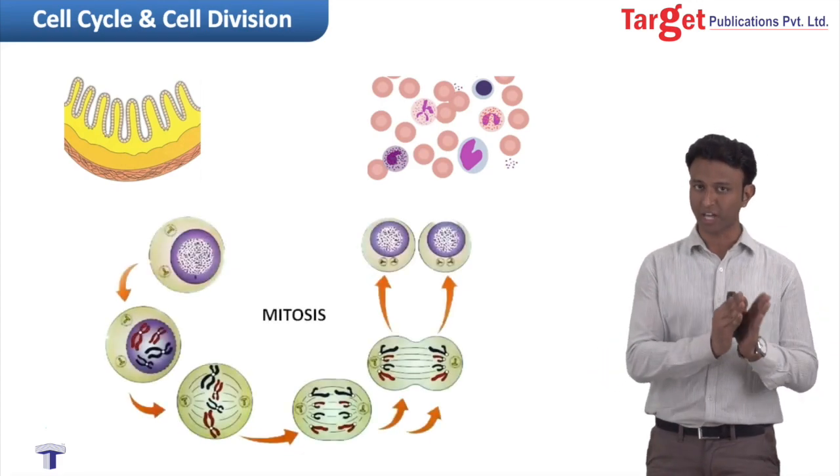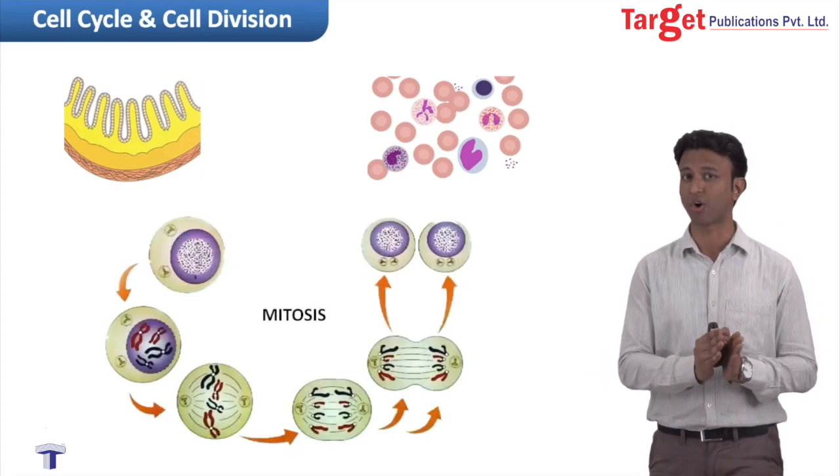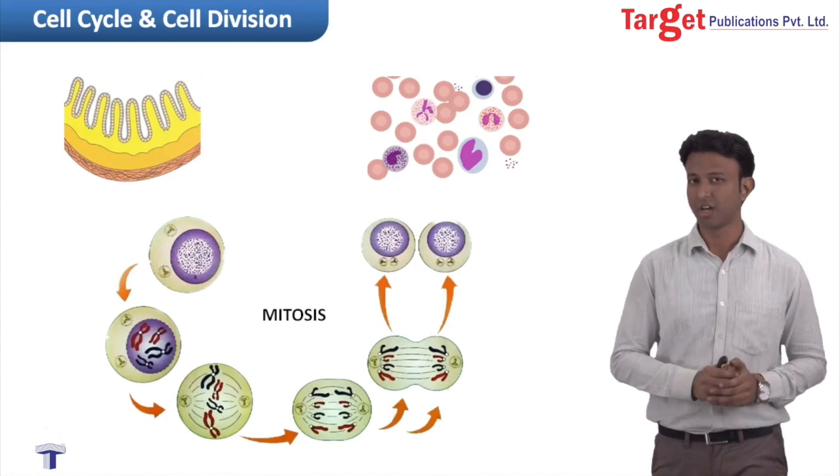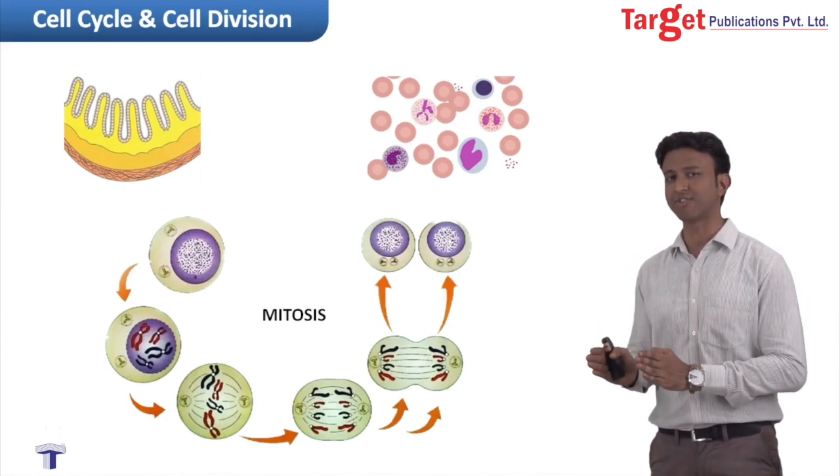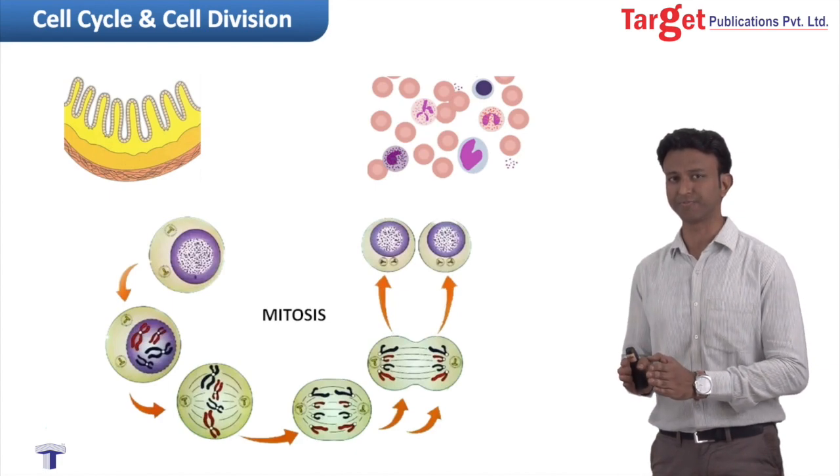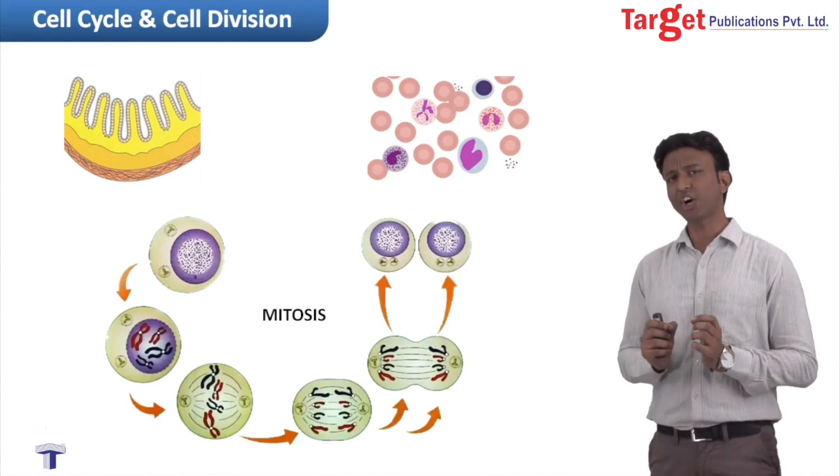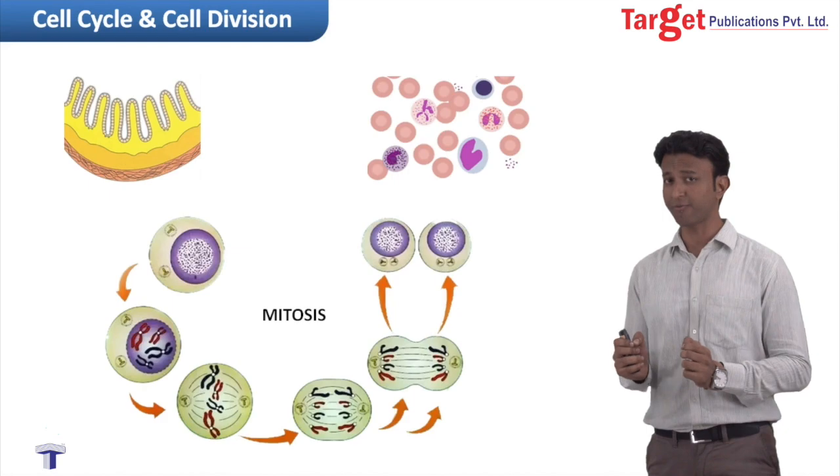So we learn that in prokaryotes, there's a process of cell division called as binary fission. In eukaryotes, there's a separate process of cell division called as mitosis. Now, there is a third process as well, again found in eukaryotes.